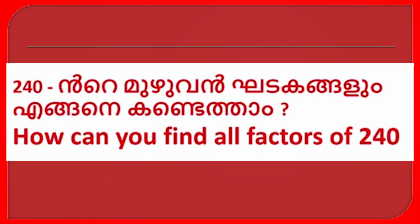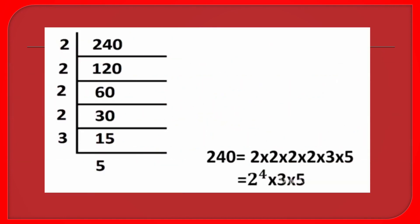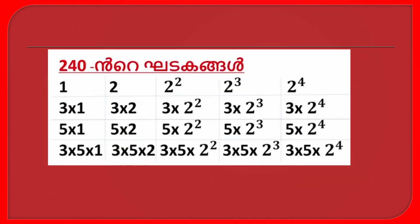How can you find the factors of 240? The factor is 3, you have 3, 6 and 6, x2, x80. Now 240 equals 2×2×2×3×5, which equals 2^4 × 3 × 5. We are right back.